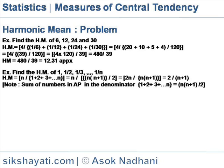Another example: find the HM of 1, 1/2, 1/3, up to 1/n for n numbers. The HM equals n divided by the sum of the inverses of these numbers, which are 1 + 2 + 3 + … + n. This equals n divided by n(n+1)/2, because the sum of the first n natural numbers is n(n+1)/2.